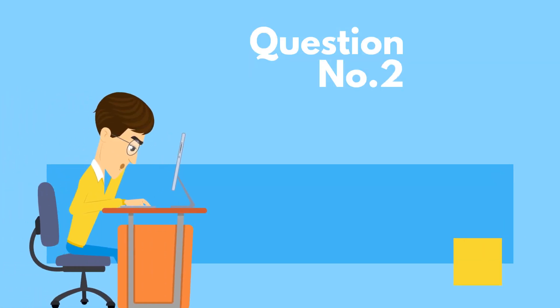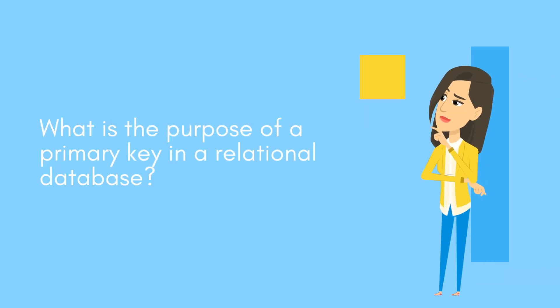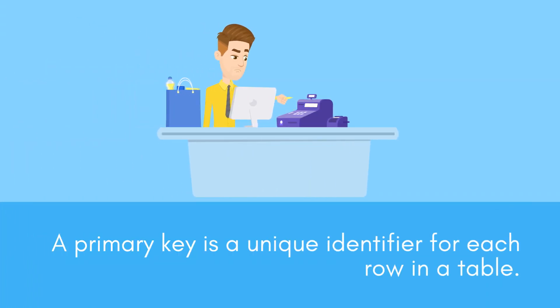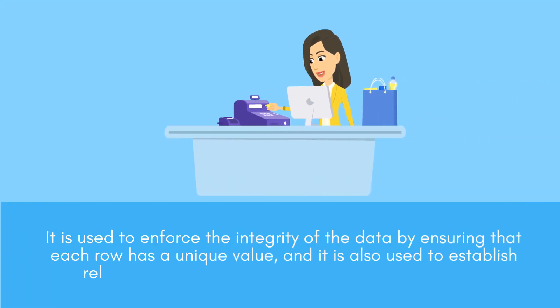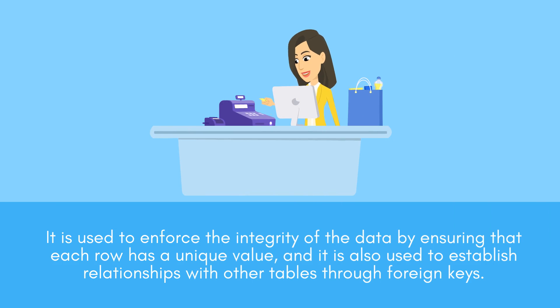Question number two: What is the purpose of a primary key in a relational database? A primary key is a unique identifier for each row in a table. It is used to enforce the integrity of the data by ensuring that each row has a unique value, and it is also used to establish relationships with other tables through foreign keys.